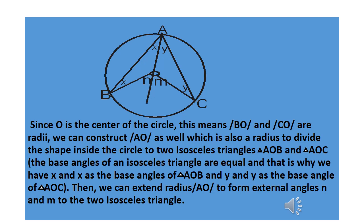What we are going to do is construct another radius from A to center O, so line AO is also a radius. Now we have three radii. That line AO we just constructed has divided the shape inside the circle into two isosceles triangles, because two sides — radius and radius — are equal, and a triangle that has two equal sides is called an isosceles triangle.